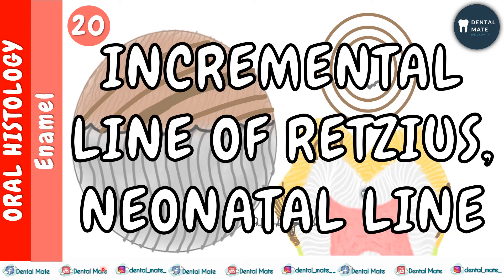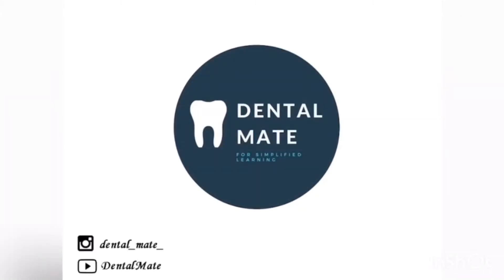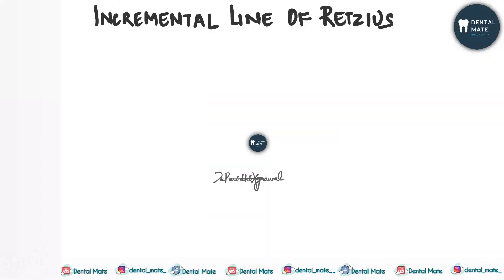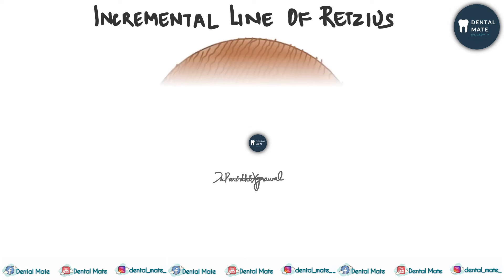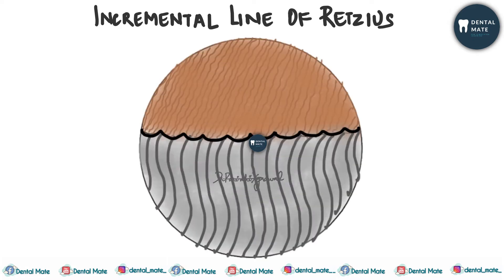Hello everyone, welcome to DentalMate. Today in this video we will be discussing the incremental lines of Retzius and the neonatal line. The incremental lines of Retzius are the brown bands which are seen in the ground section of enamel.